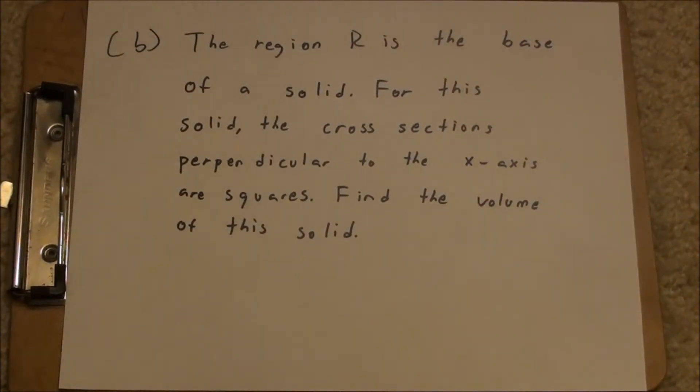The second part of the problem says, the region R is the base of a solid. For this solid, the cross-sections perpendicular to the x-axis are squares, and find the volume of the solid.